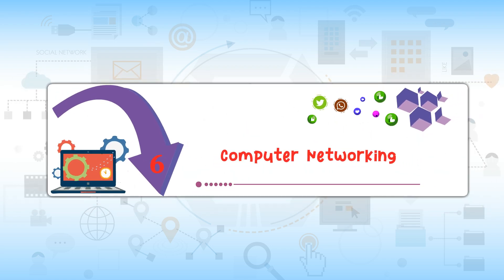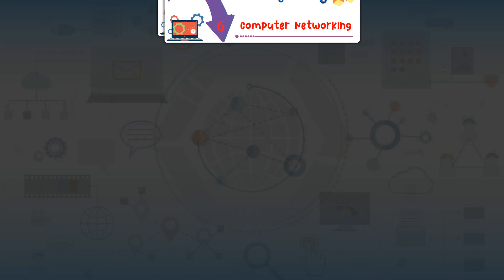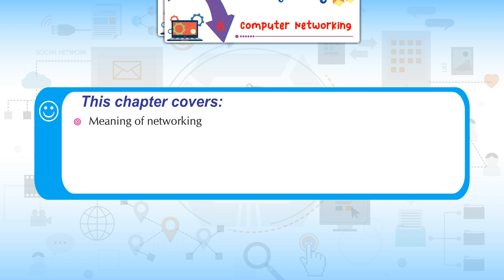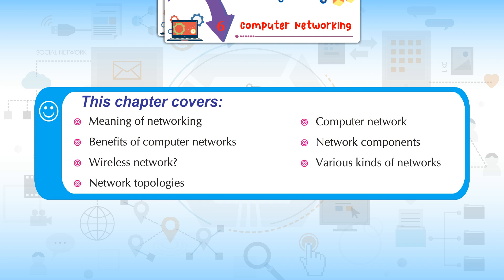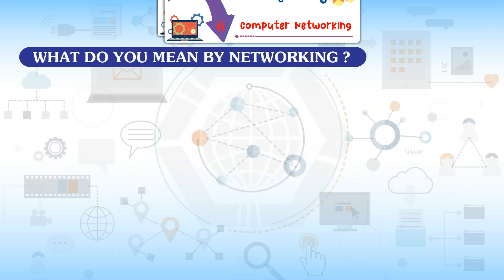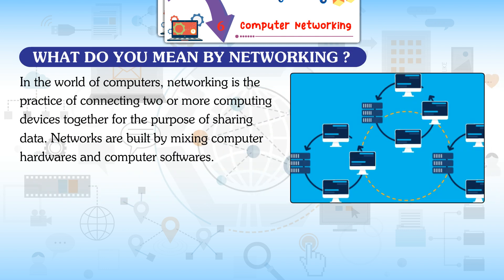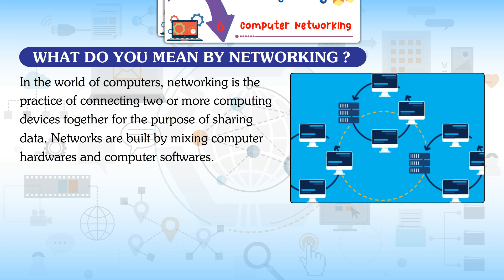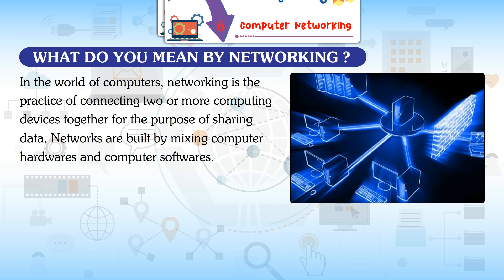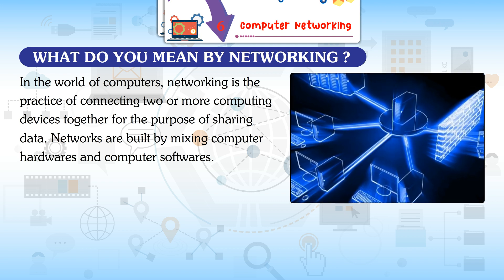Chapter 6: Computer Networking. This chapter covers the meaning of networking, computer network benefits, network components, wireless networks, various kinds of networks, and network topologies. In the world of computers, networking is the practice of connecting two or more computing devices together for the purpose of sharing data. Networks are built by mixing computer hardware and computer software.